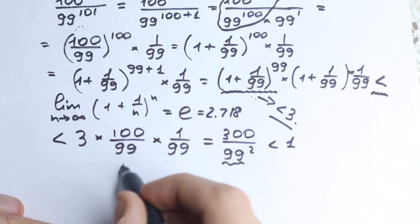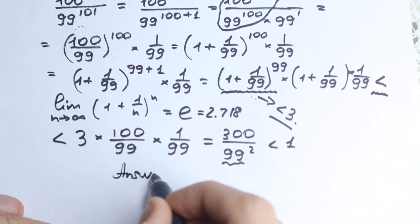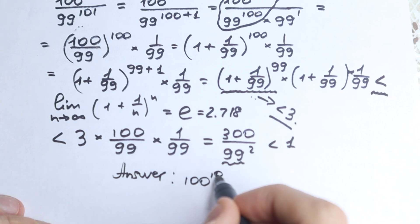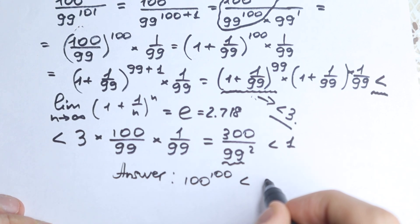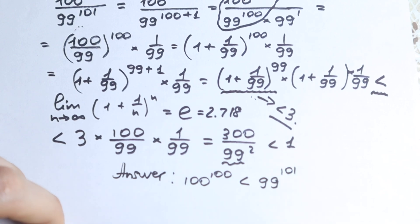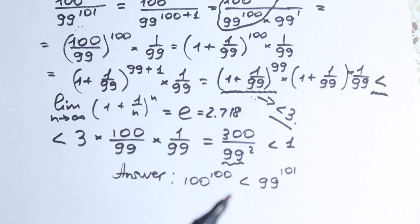So our final answer: 100 to the power 100 is less than 99 to the power 101. This is my explanation to this question. I hope you understand it, but if you still have any questions, write them in the comment section — share your thoughts, maybe you have your own method for comparing these two numbers. Thank you for your time, have a great day, see you in the next videos, and I wish you all the best in your mathematics adventures.